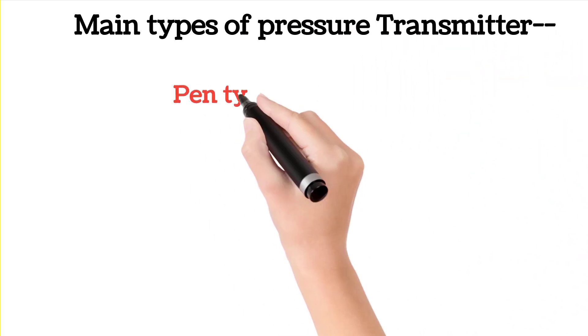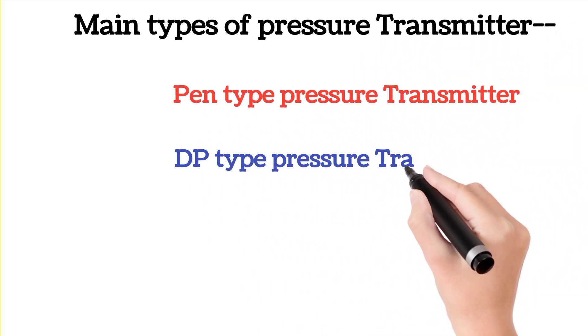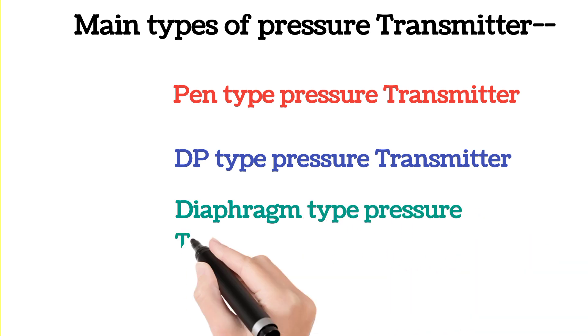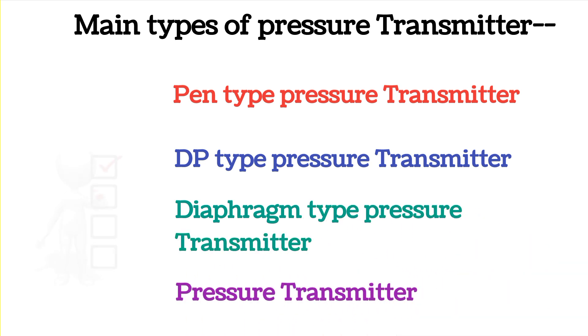Main types of pressure transmitters are pan type pressure transmitter, DP type, diaphragm pressure transmitter and pressure transmitter.